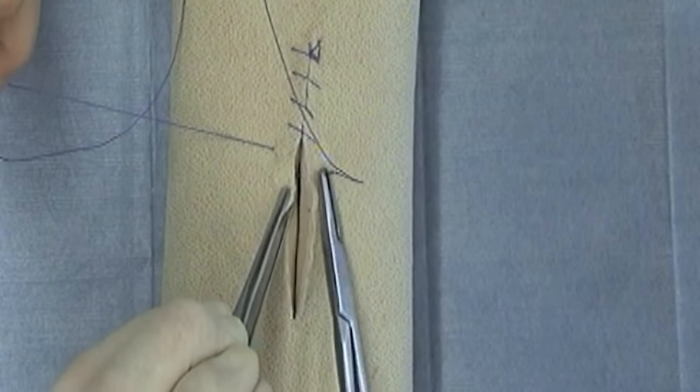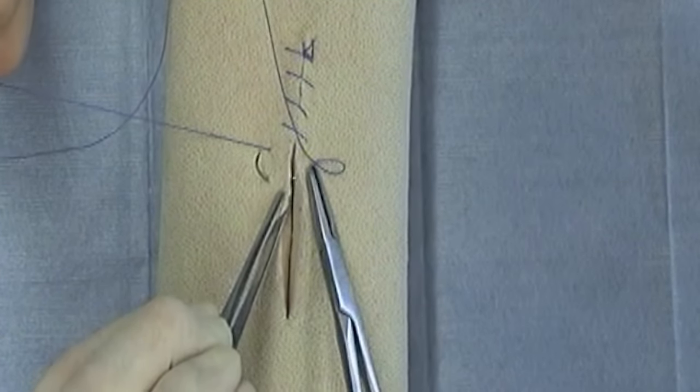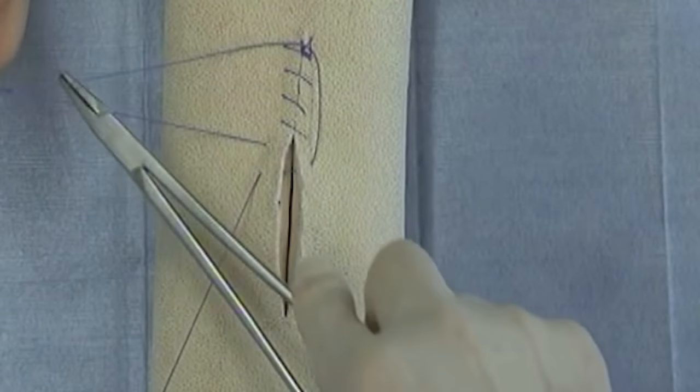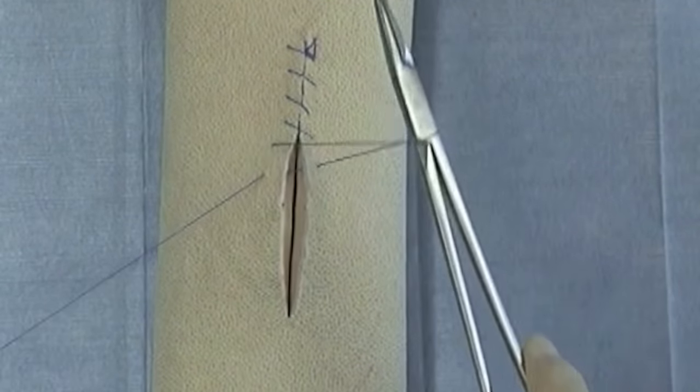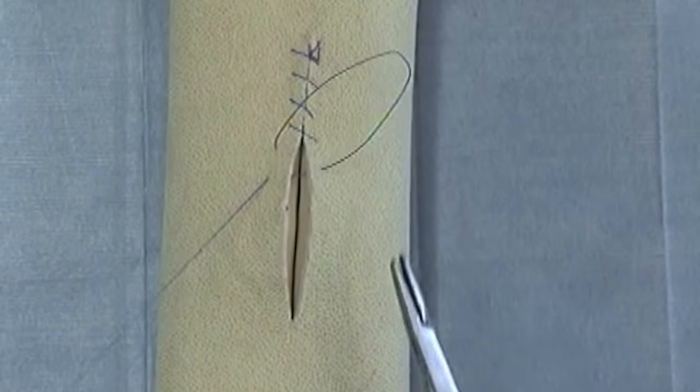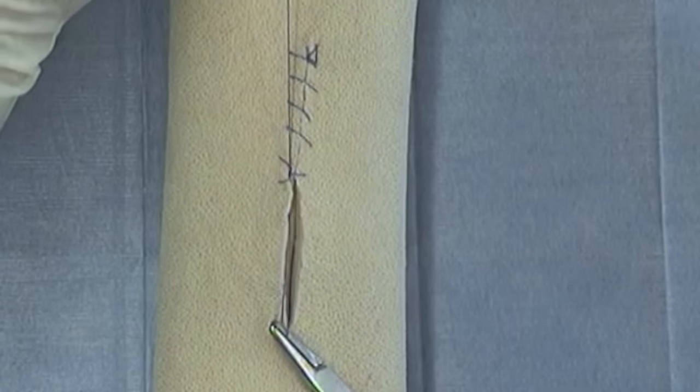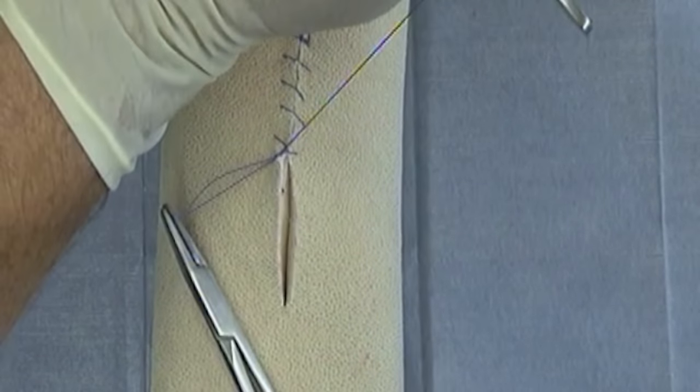Now if I wanted to end the pattern here, there are two ways that this pattern can be ended. One is to simply tie to your last loop of suture, which is perfectly acceptable.